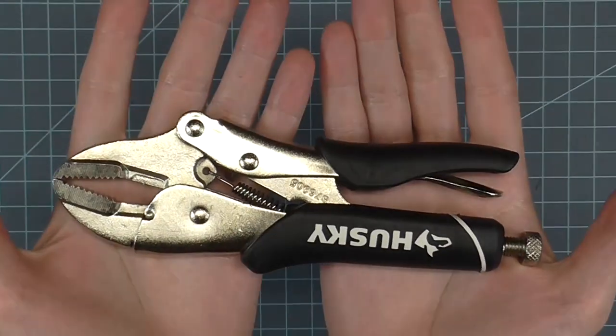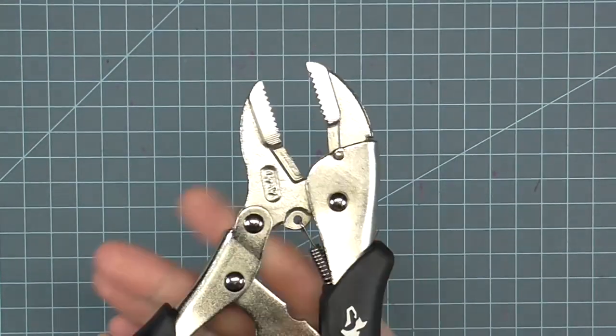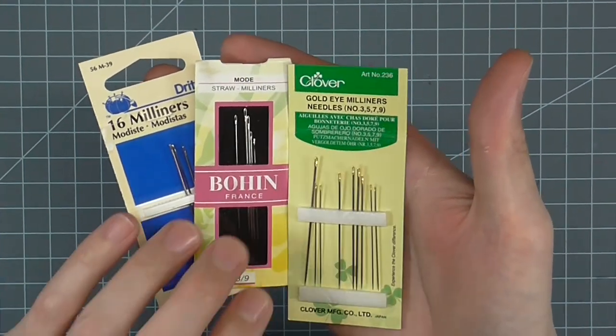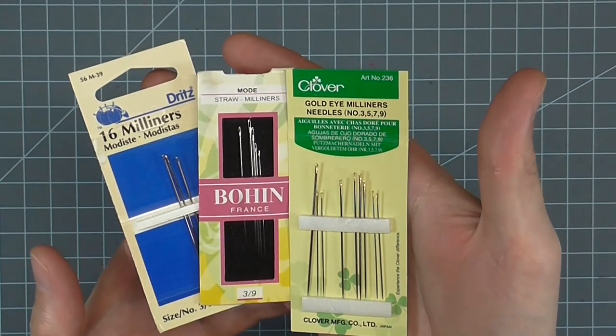Locking pliers help to crimp one of the components that join wire ends together. Milliner's needles are sized the same as sewing needles, with the smaller numbers being the larger needle.